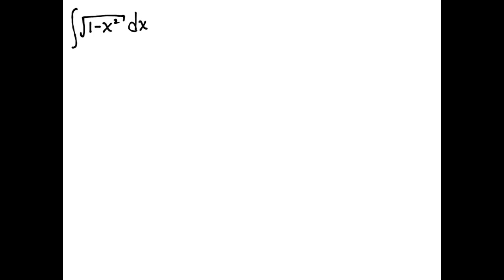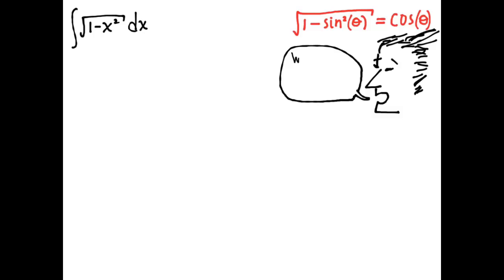For example, suppose we had the square root of 1 minus x squared. What you should notice is that it looks similar to the trigonometric identity: the square root of 1 minus sin squared theta equals cosine theta. Since we're introducing the variable theta and can define it however we want, we can define it to be in the first quadrant, so we can use that identity as it stands.